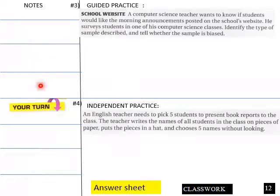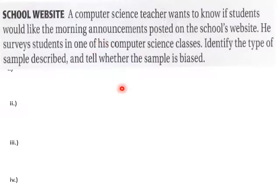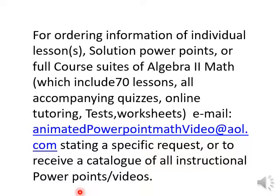Here's our second guided practice. A computer science teacher wants to know if students would like the morning announcement posted on the school's website. He surveyed students in one of his computer science classes. Identify the type of sample described and tell whether the sample is biased. The computer science teacher selects students that are easily accessible, so the sample is a convenient sample. The sample is biased because students in the computer science class are more likely to get their information off a computer.